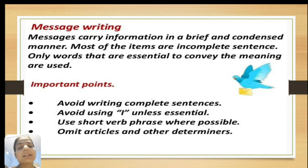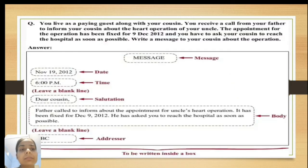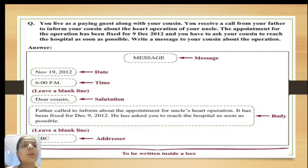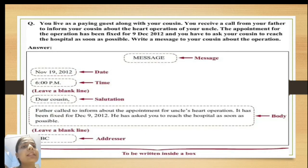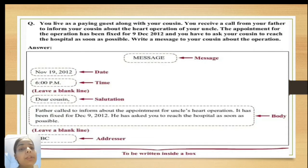Omit articles and other determinants. Now let's see how to write a message. This is the format. The question is: you live as a paying guest along with your cousin. You receive a call from your father to inform your cousin about the heart operation of your uncle. The appointment has been fixed for 9th December 2012, and you have to ask your cousin to reach the hospital as soon as possible. Write a message to your cousin about the operation.